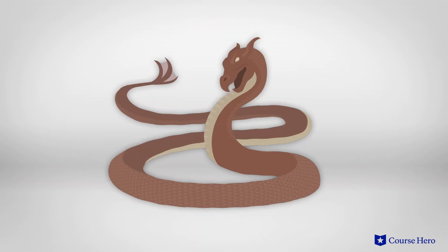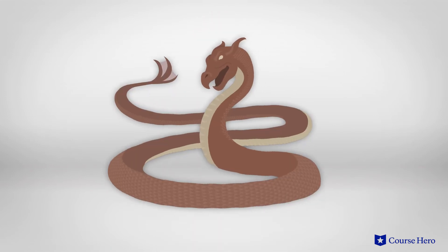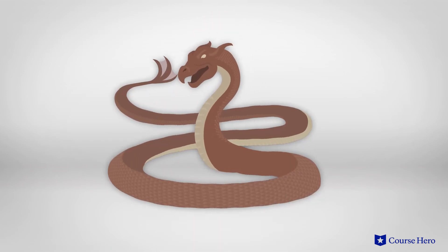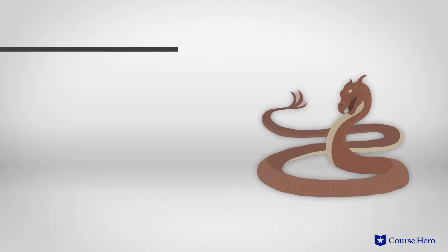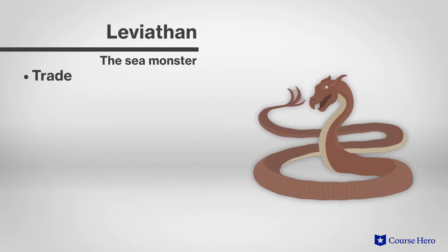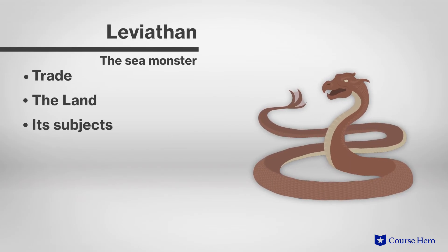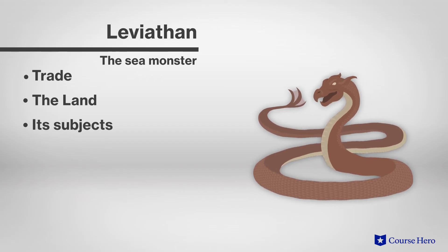The rest of part two explains in detail the various systems that make the Leviathan function. Hobbes uses biological analogies to emphasize the extended metaphor of the body of the Leviathan — a gigantic mythical sea serpent — as an image of the body politic. The monster is nourished by trade and by the resources of the land and its subjects, and the sovereign has executive power to establish the rules that govern these spheres.